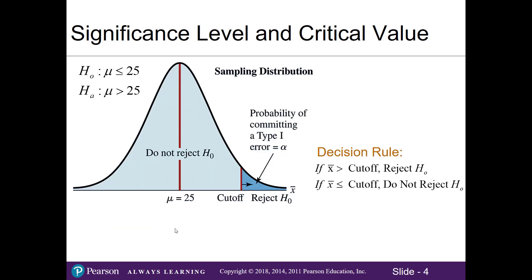The purpose of a hypothesis test is to use sample information to decide whether or not to reject the null hypothesis about a population parameter. To do this we need to select a cutoff point — kind of like when you take a class as pass/fail, there's a particular grade or cutoff point that determines whether or not you pass. So we need to create a decision rule: if our sample mean is greater than some cutoff point we reject the null, otherwise we do not reject.